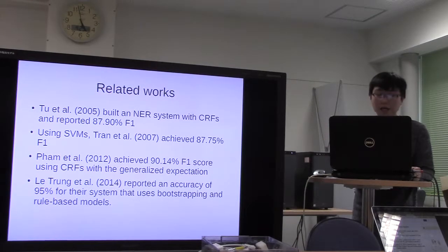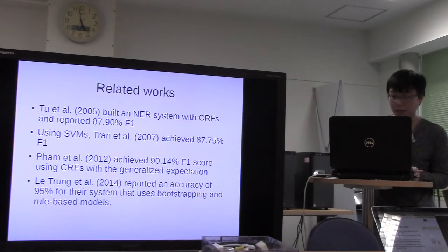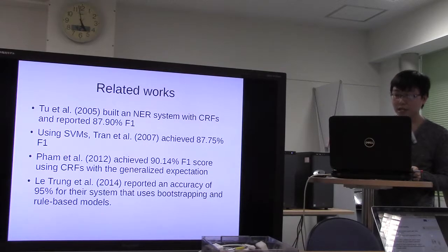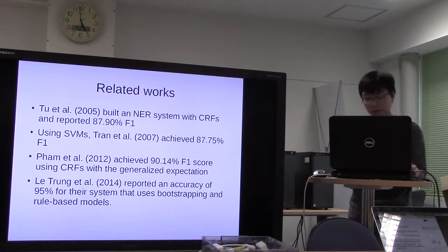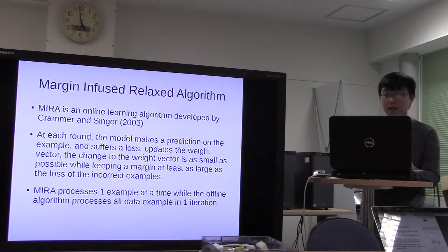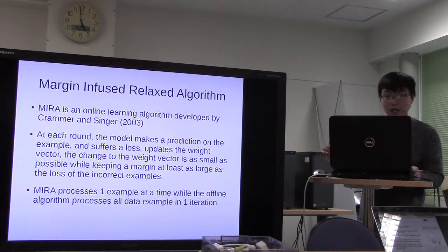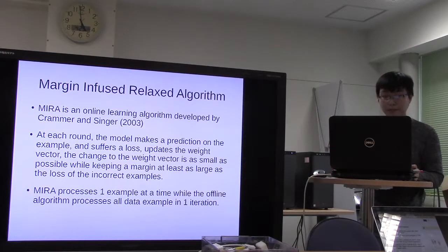The most recent named entity recognition system, built in 2014, reported an accuracy of about 95%. Their system used bootstrapping and a rules-based model.